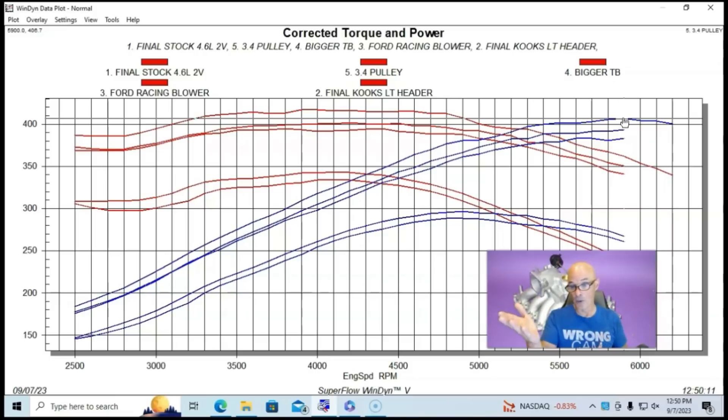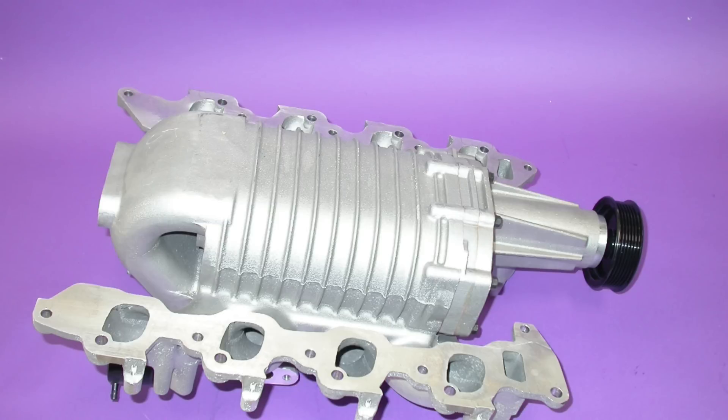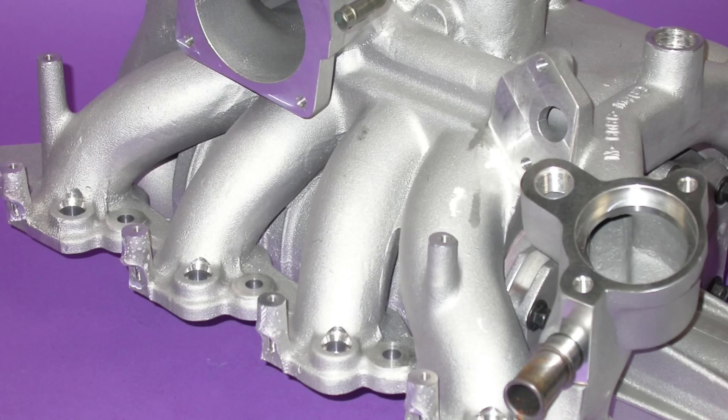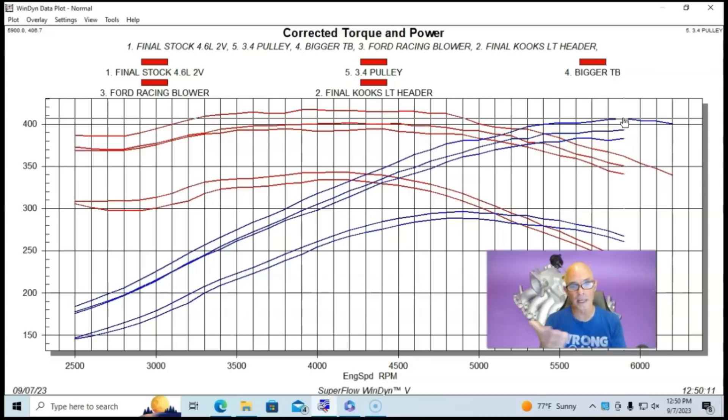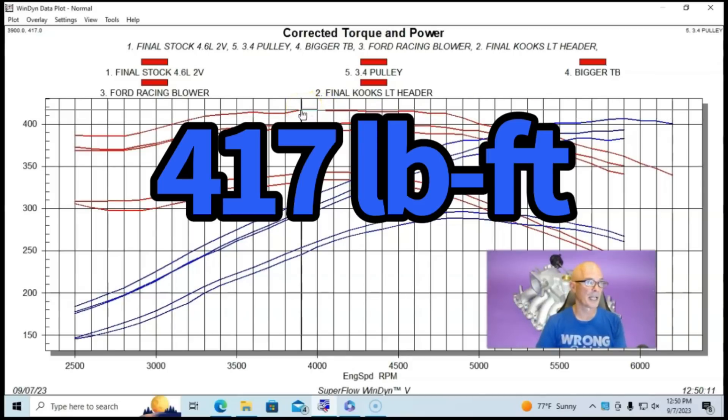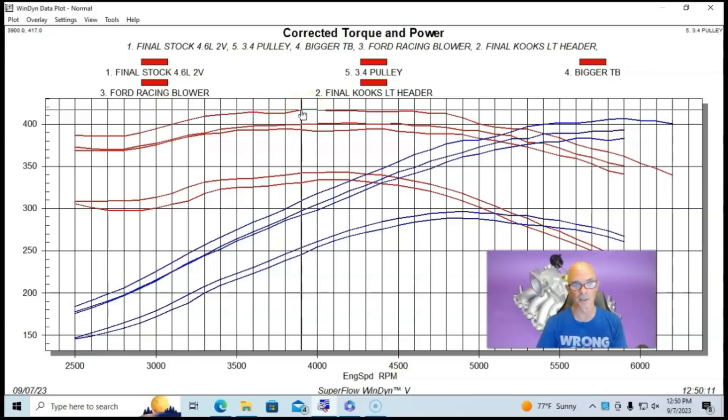And now we're running with the stock cams and stock cylinder head. And obviously, the intake manifold, the PI intake manifold was gone because it was replaced by the blower assembly, which had its integrated intake manifold. Both of them were making over 400 horsepower. And in the case of the blower, it was making 417 foot pounds of torque.